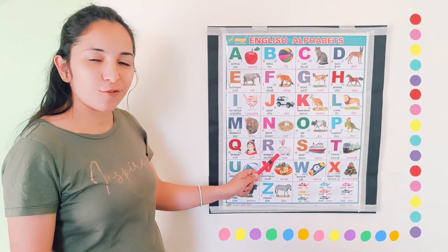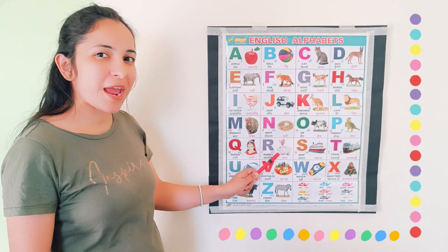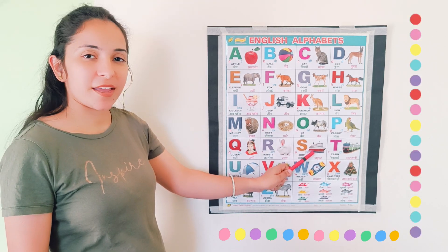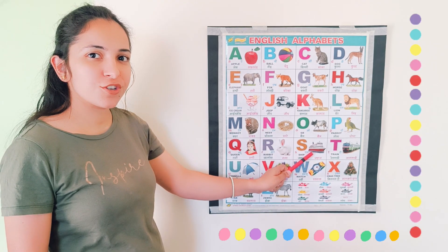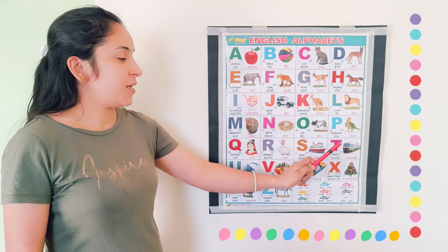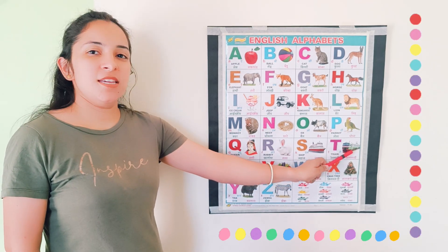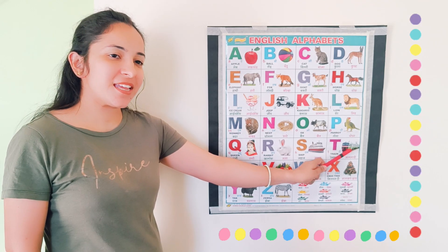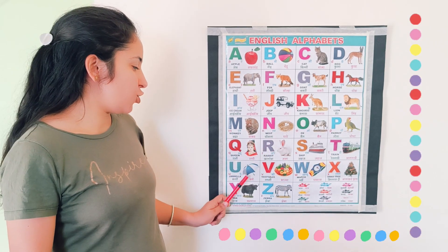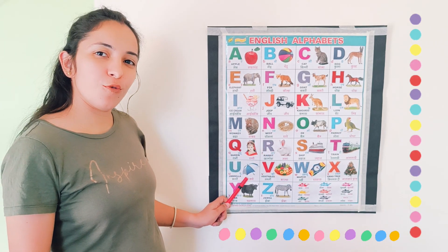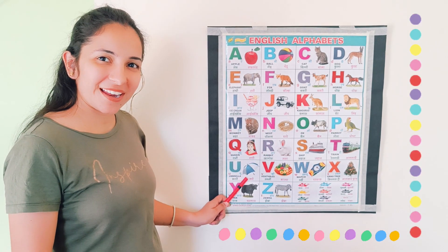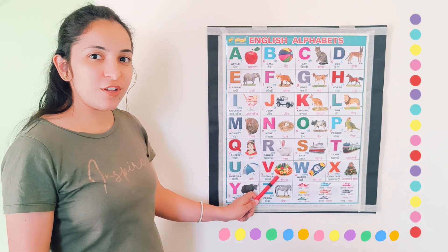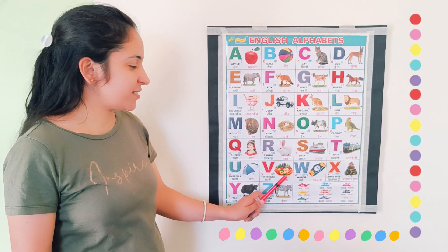R. R for rabbit. S. S for ship. T. T for train. U. U for umbrella. V. V for vegetables.